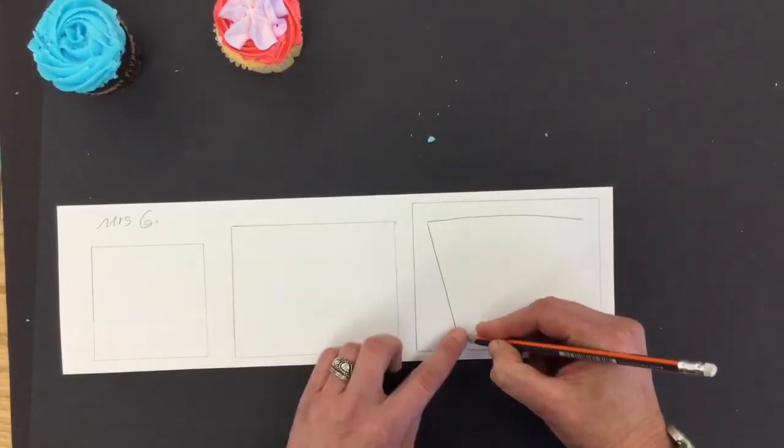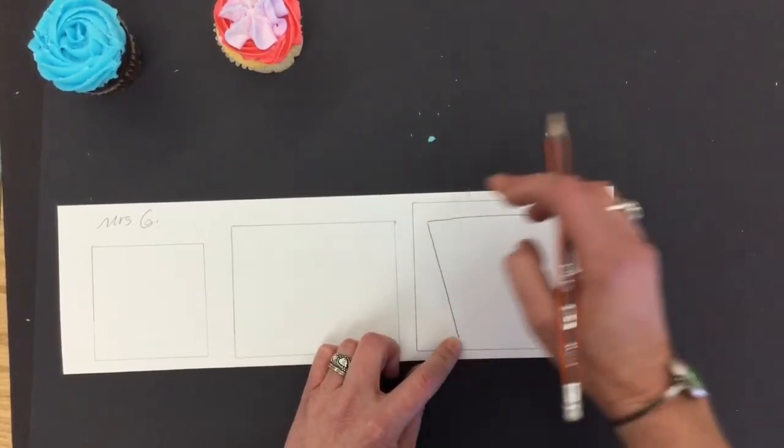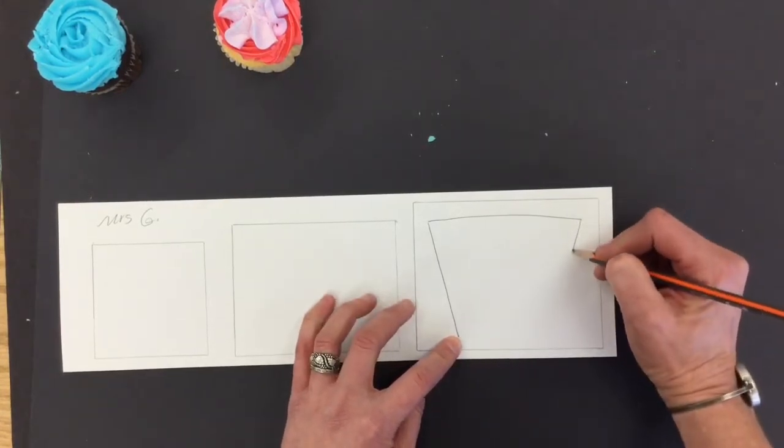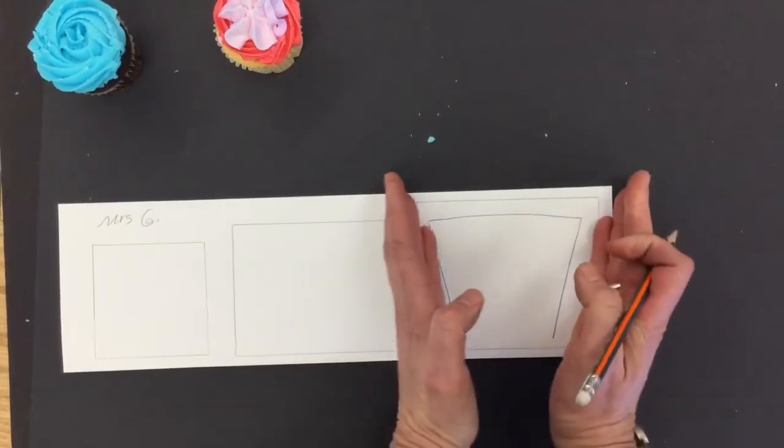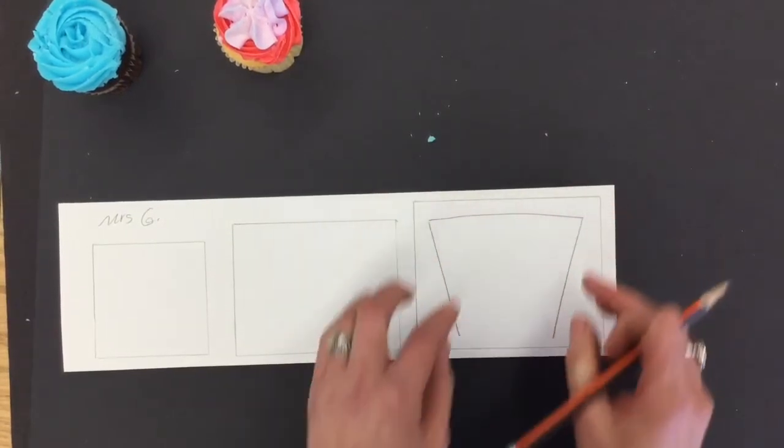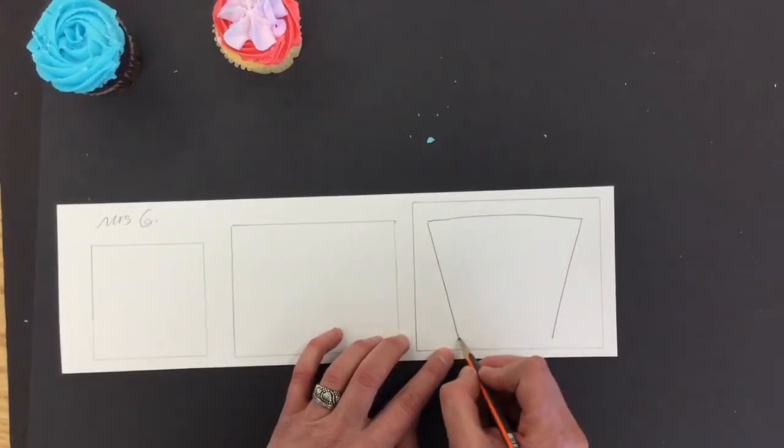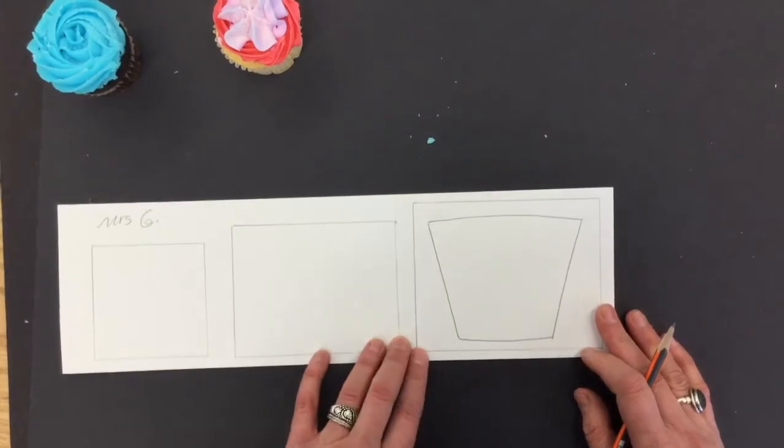You do want it to go almost all the way to the bottom because we want to fill this space. That's very important. Okay, so we've got two slants that are about the same and now we're going to just add the bottom of our trapezoid. Ta-da! That's done.